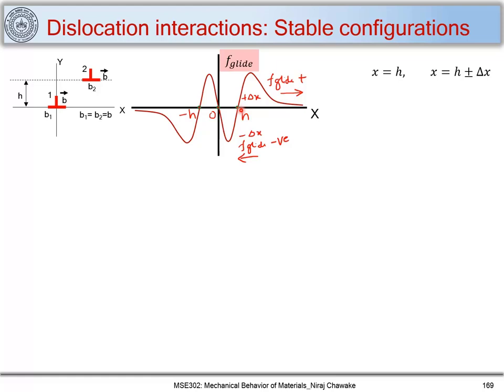Now let's consider x equal to minus h. When I perturb this dislocation by plus delta x, the glide force is positive, making the dislocation move further in the positive direction. When I perturb it by minus delta x, the glide force is negative, making the dislocation move in the negative direction. So the minus h position is also not a stable configuration for this dislocation.